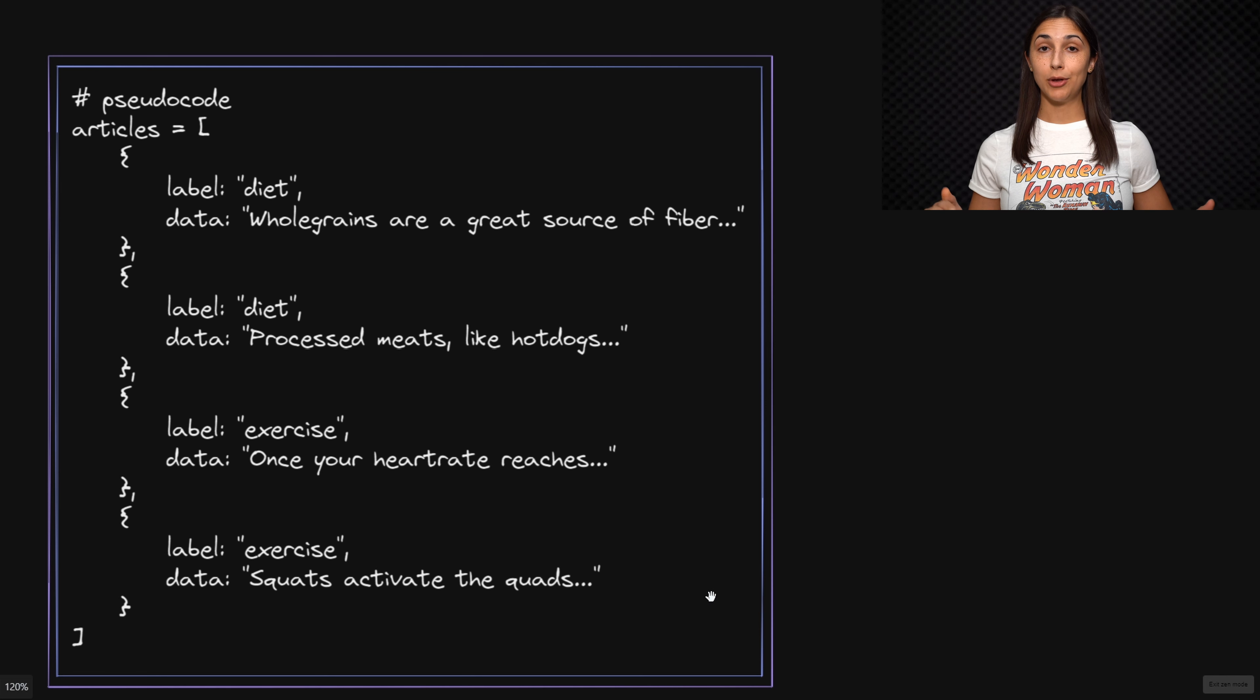During some training process, the learning algorithm will learn what about these articles make them be associated with diet versus exercise. With what the learning algorithm has learned from this labeled data set, it will be able to make inferences about new articles in the future, and classify these new articles as being either about diet or exercise, even though it was never given explicit instructions on how to do this classification.